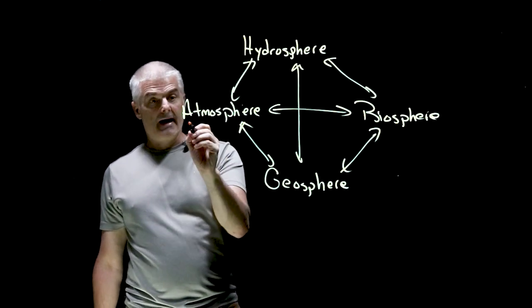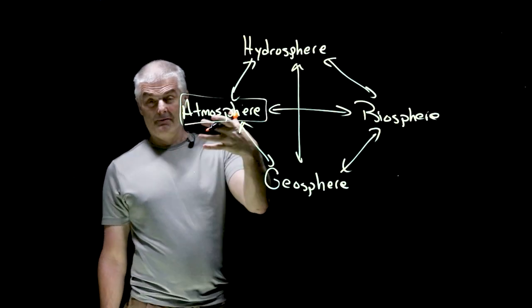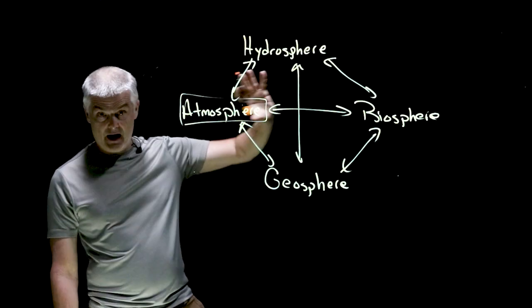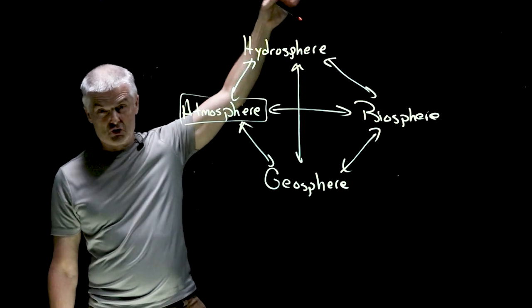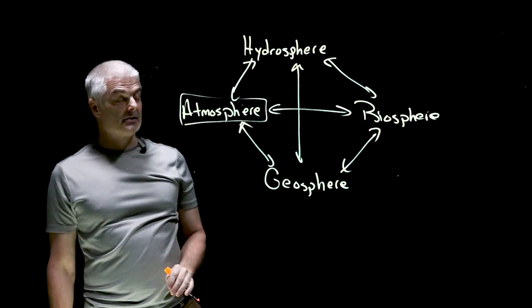Let's define each of these. Atmosphere - that's the stuff above the surface of the Earth, the air. It starts at the bottom of the Earth and goes up to the troposphere. We'll get into a lot of details later on in the course.